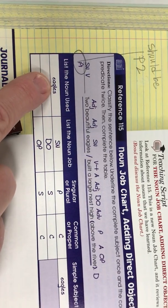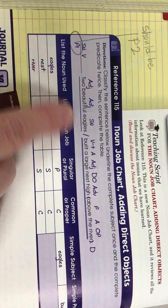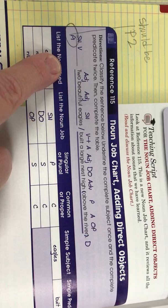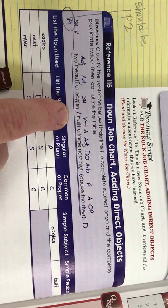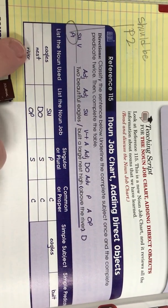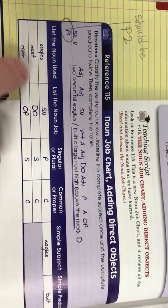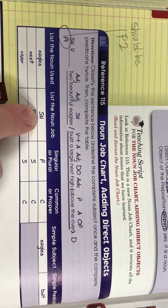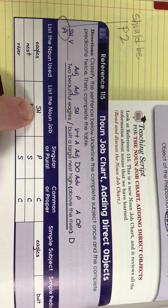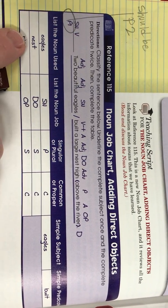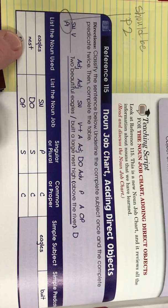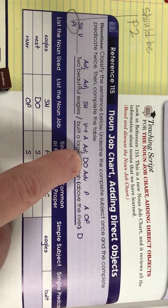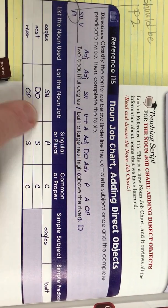We've done these before where you have a sentence we already classified: two beautiful eagles built a large nest high above the river. So when we have a chart like this, you can see that eagles is your subject noun. Then another noun would be nest, and in our sentence here we can see that nest's job is a direct object.